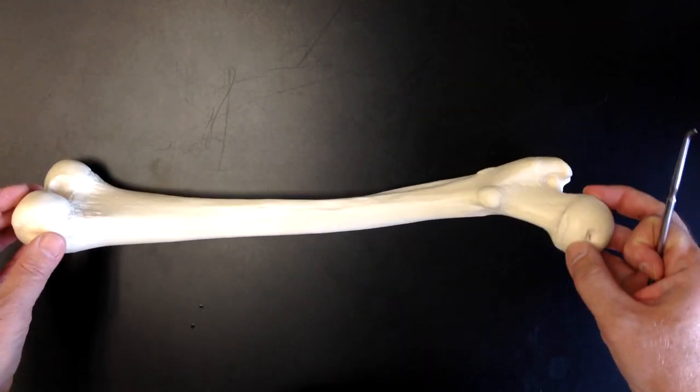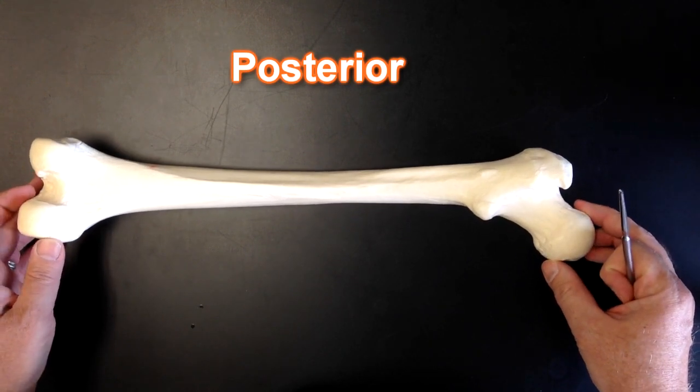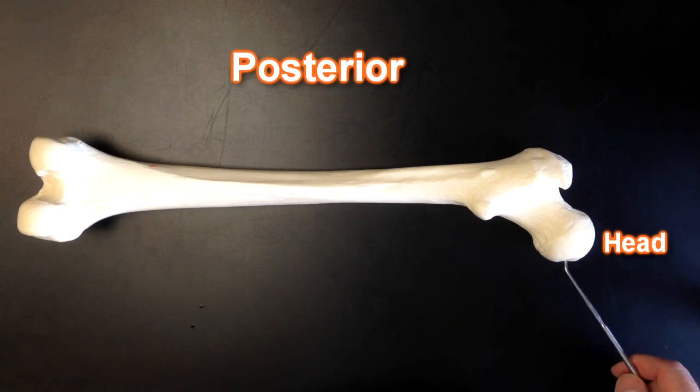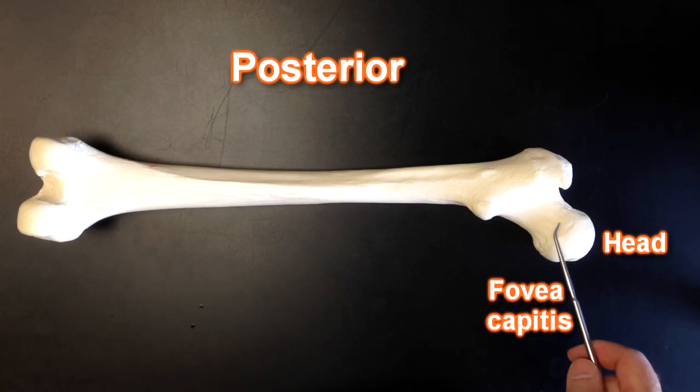If we move to the back of the femur we can see more stuff. Here we can see the rest of the head of the femur, we can see the fovea capitis a little bit better, the neck.